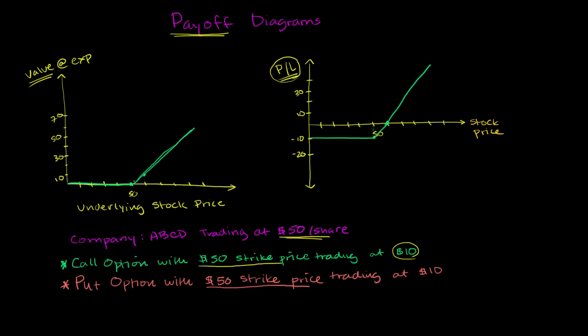So once again, we're going to draw two types of payoff diagrams. One type that only cares about the value of the option at expiration, and this is what you tend to see in academic settings, business schools, or textbooks. And then the other one will actually draw the profit and loss based on that option position, incorporating the price you actually paid for the option. You tend to see this more in practice.